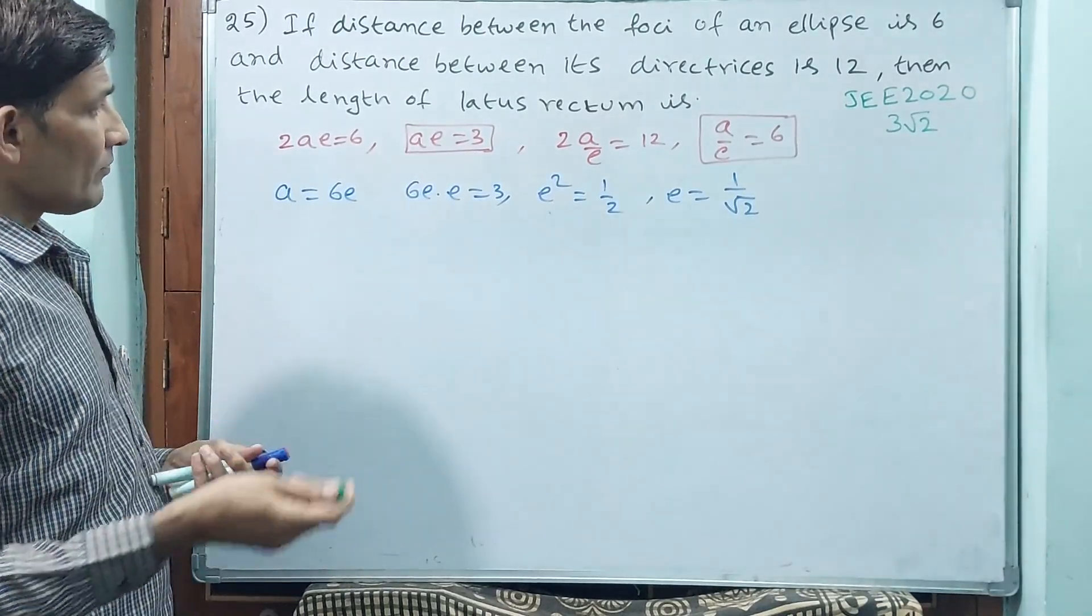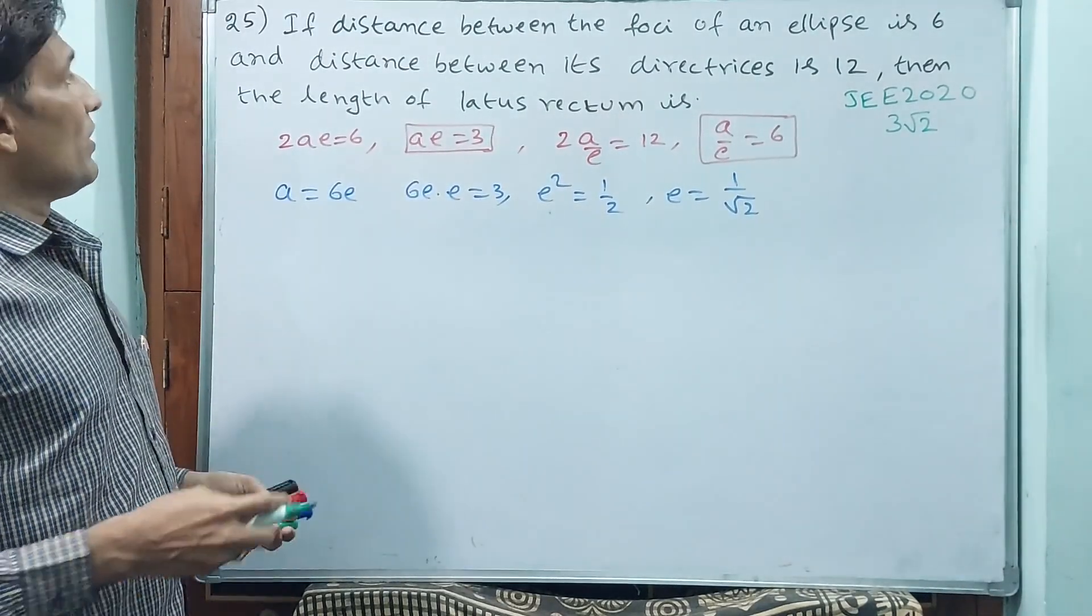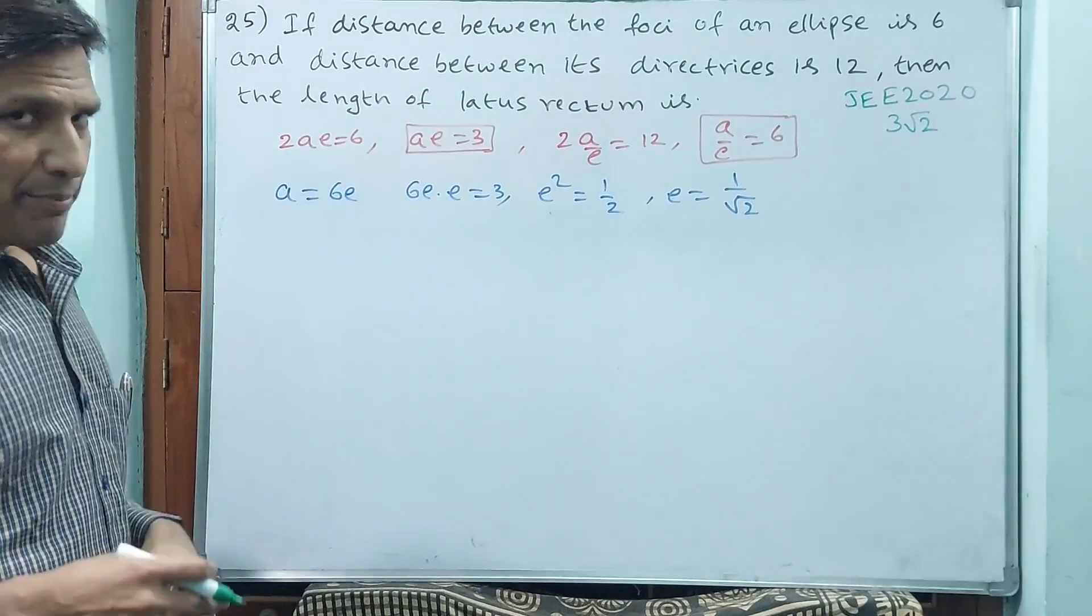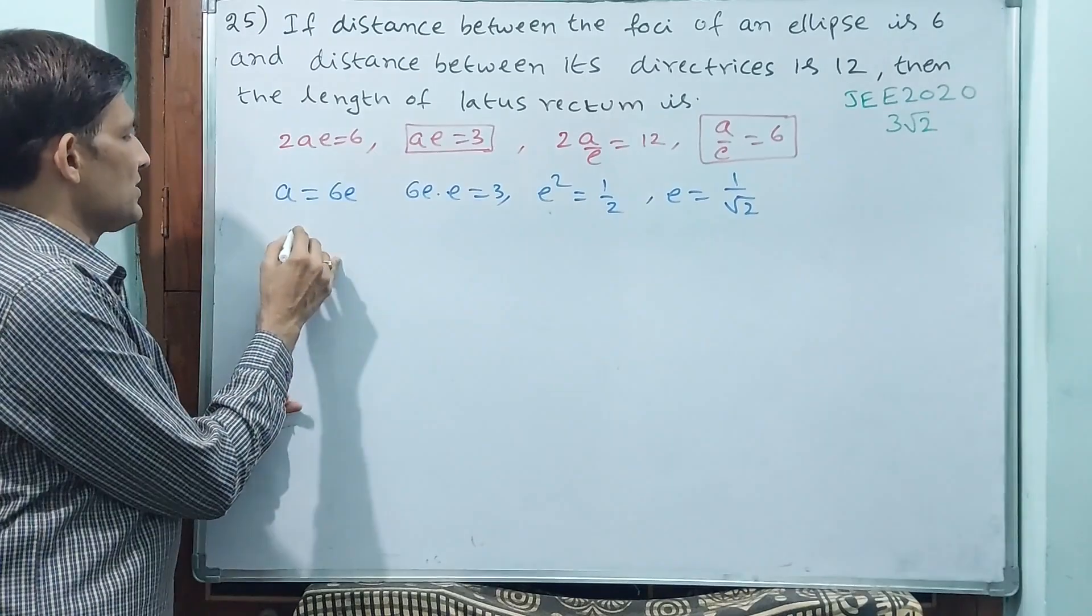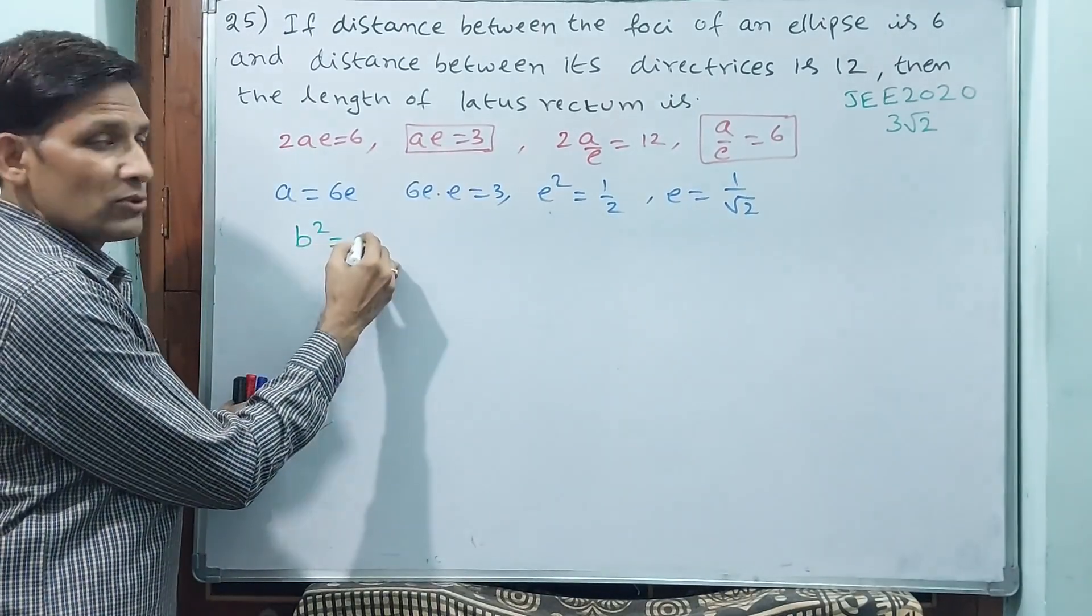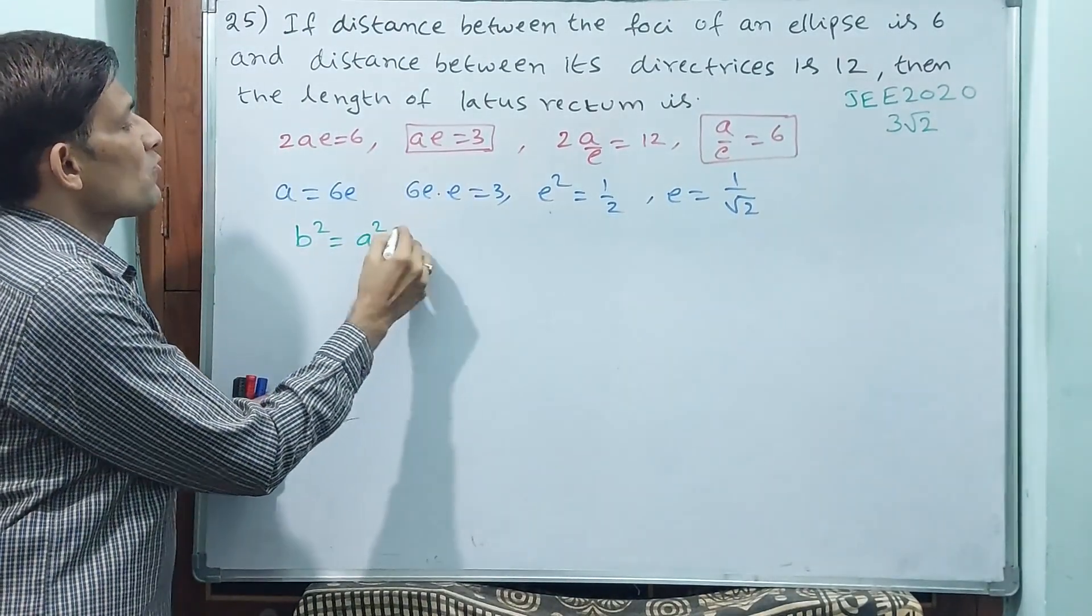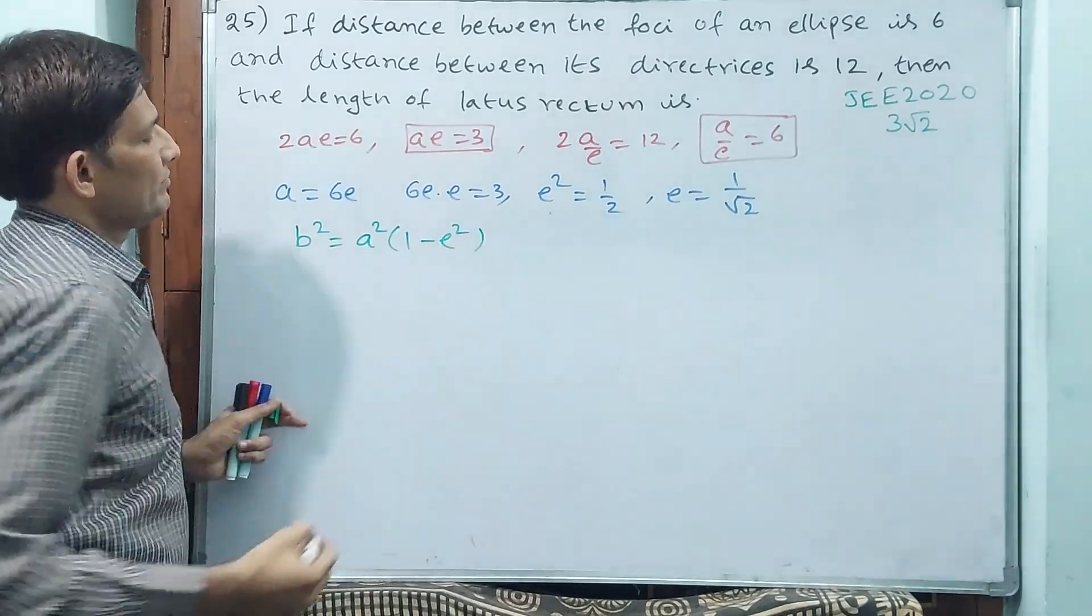Now see, length of latus rectum is 2B²/A. 2B²/A. B, how we are going to find? See, B² I am finding. B² is equal to A² into (1 minus E²).